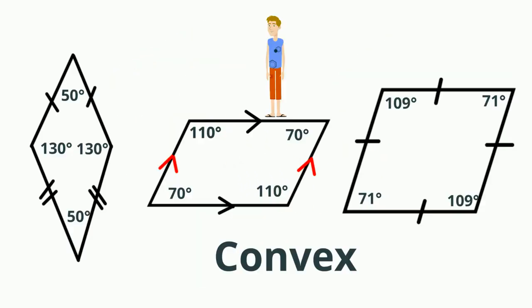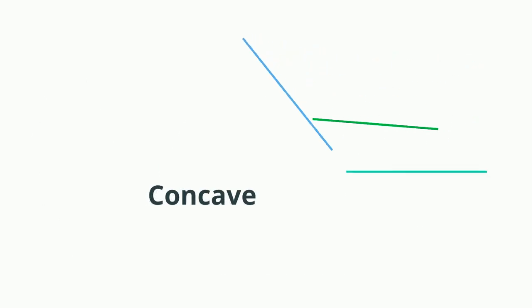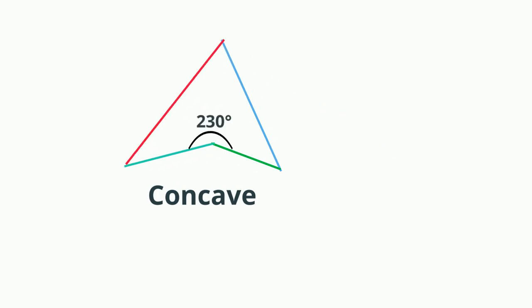So in summary, a convex quadrilateral has all four angles that are less than 180 degrees, and a concave quadrilateral has at least one angle greater than 180 degrees. Thanks for watching.